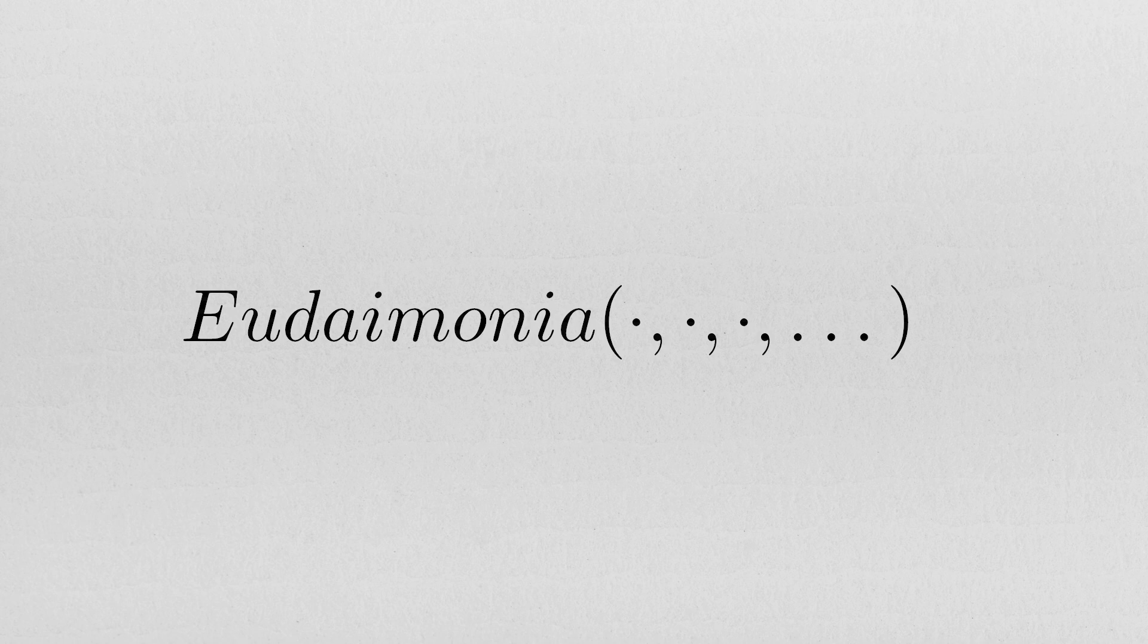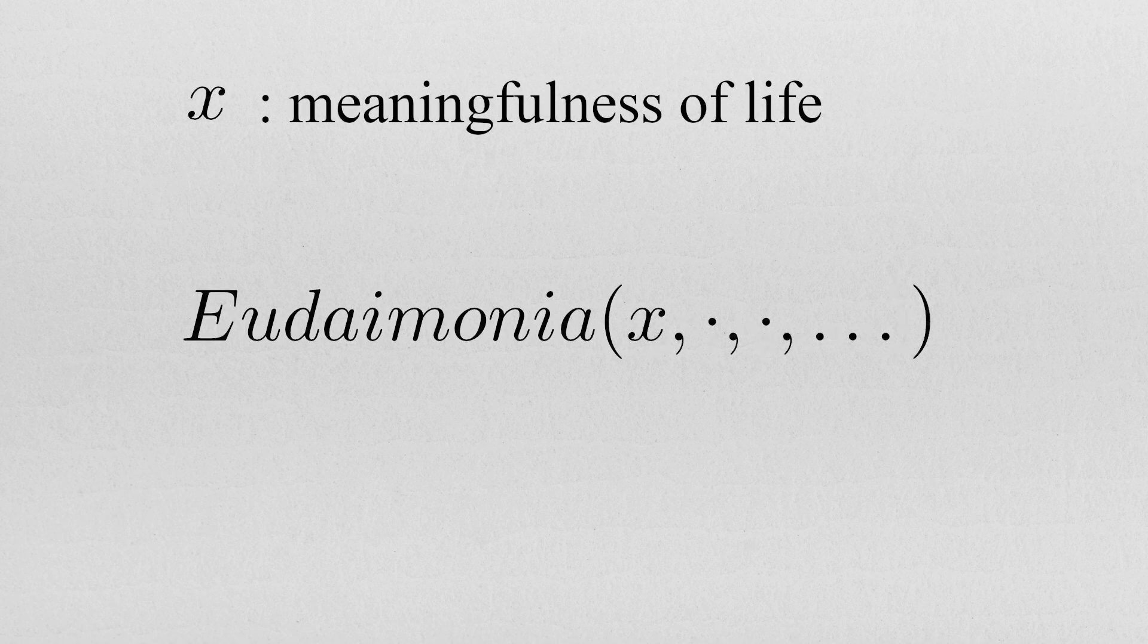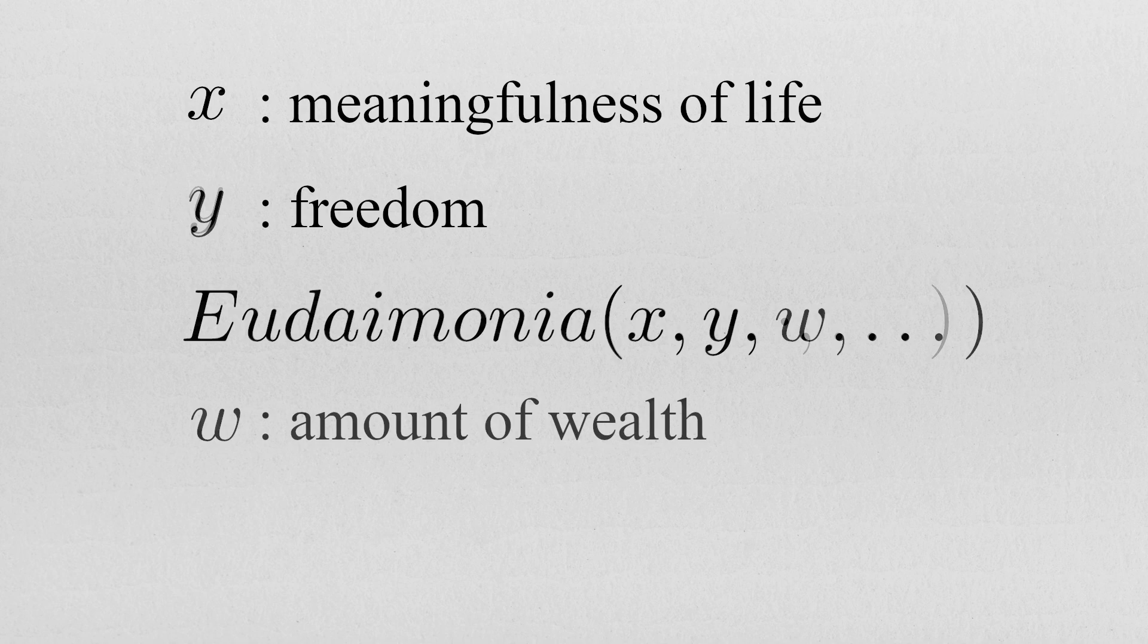A way to formalize these notions is to consider the definition of eudaimonia as a huge multivariable function with many components, each component being in a relationship to eudaimonia. Taking the exemplifications just cited, the components could be the meaningfulness of the life one is living, freedom, the amount of wealth, etc.